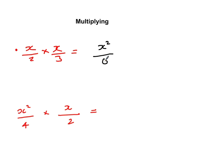2 times 3, 6. There we go. The next one, we've got an x squared times x. Now x squared times x is x cubed. 4 times 2 is 8. So we just follow the same rules that we would do with numbers.